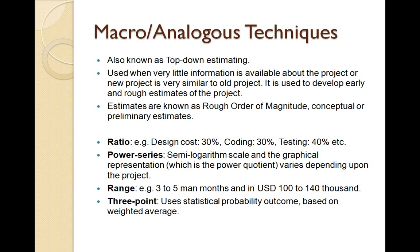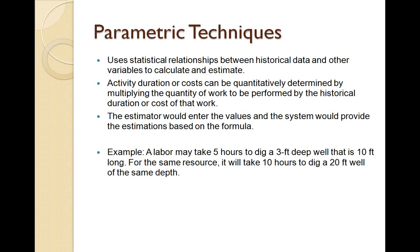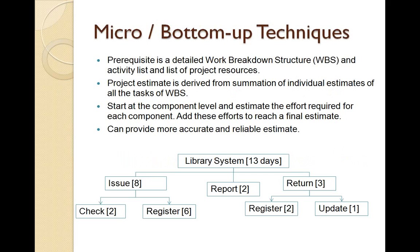The next category is parametric technique, which uses statistical relationships between historical data and other variables to derive estimates. It quantitatively determines activity duration and cost by multiplying the quantity of work by historical cost and duration. For example, if a laborer takes 5 hours to dig a 3-foot-deep, 10-foot-long well, and now must dig a 20-foot-deep well with the same parameters unchanged, the estimate doubles to 10 hours. This proportional comparison allows parametric techniques to project approximate estimates.